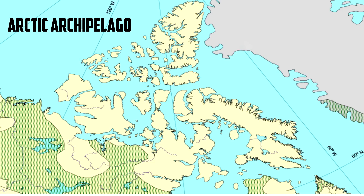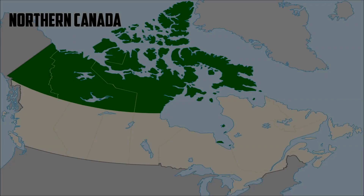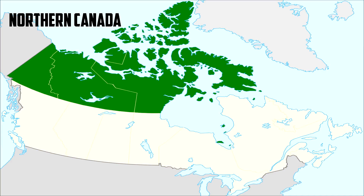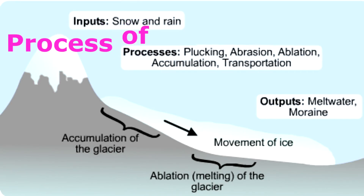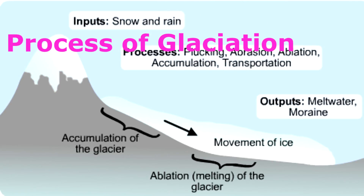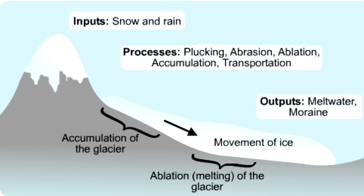The Arctic Lowlands is located in the Arctic Archipelago and in Northern Canada. The Arctic Lowlands make up a fourth of Canada. They were formed by the movement of glaciers across the surface about 7,500 years ago, and also by faulting and rock, which is what caused there to be islands in the Lowlands too.